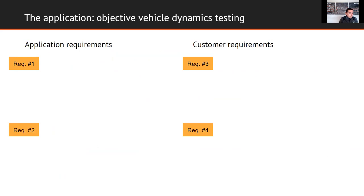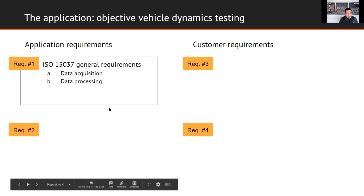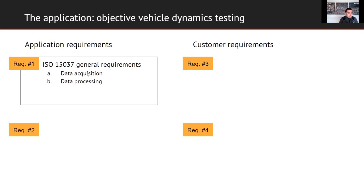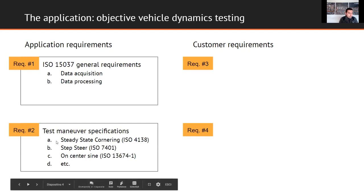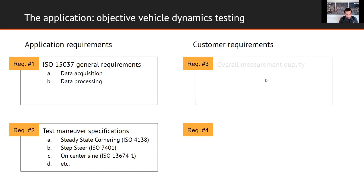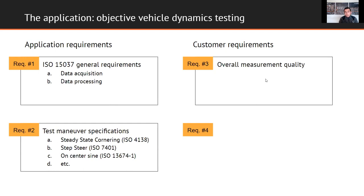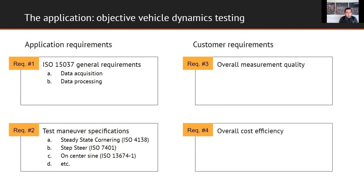Coming to the application, we have four main requirements. The first two are related to the test process itself: data acquisition and data processing based on ISO standard 15037, and specific requirements related to each test manoeuvre necessary to characterize the vehicle dynamic behavior — steady state, step steer, on-center, etc. Then we have what we call the customer requirements: quality of measurements and cost efficiency.